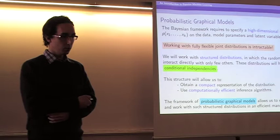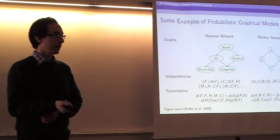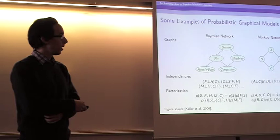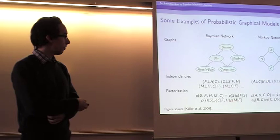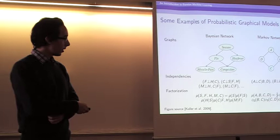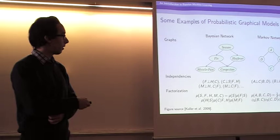Probabilistic graphical models are just a way to represent a compact probability distribution. These graphical models induce the distribution of data, model parameters, and latent variables in terms of a product of simple factors. This factorization induces a set of conditional dependencies among the random variables, which can be represented in the form of a graph. We will explain the characteristics of these two different types of probabilistic graphical models — Bayesian networks and Markov networks.